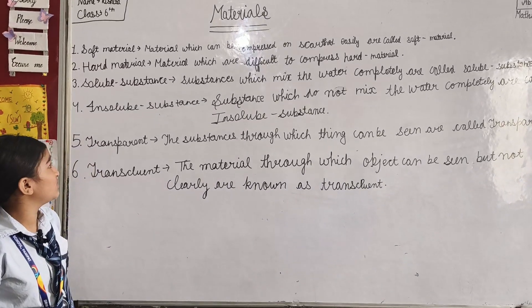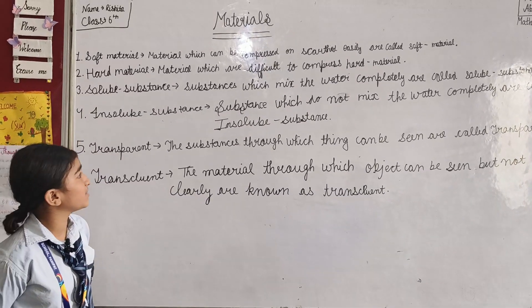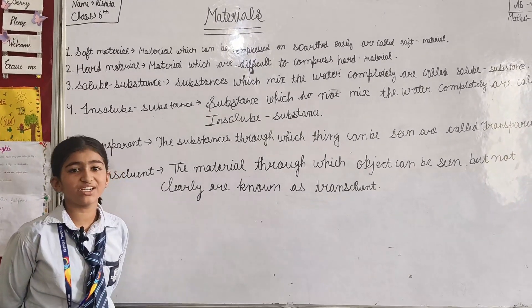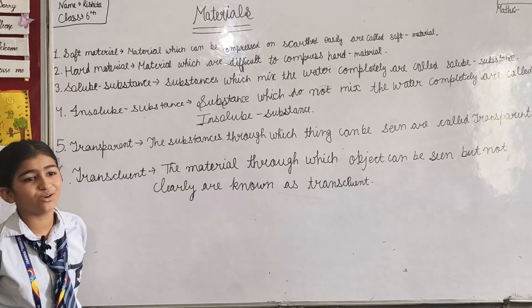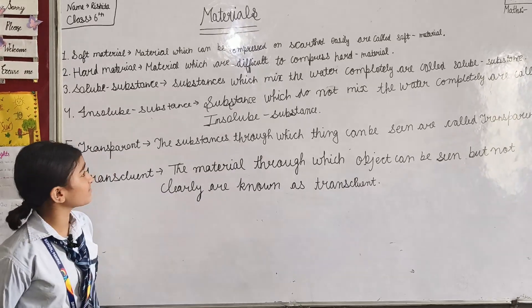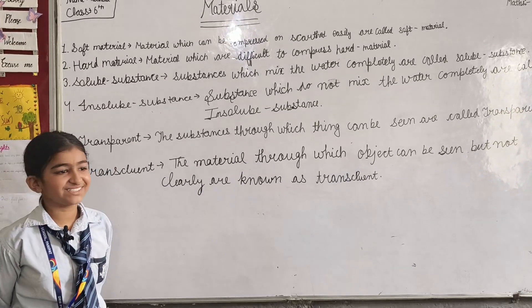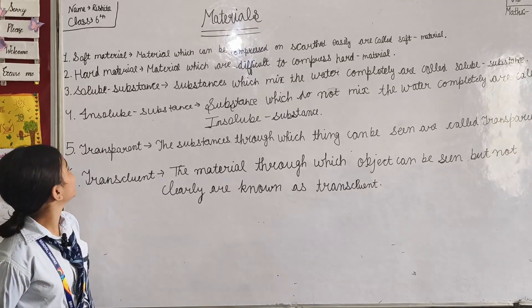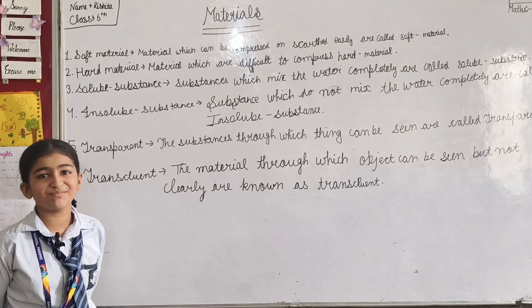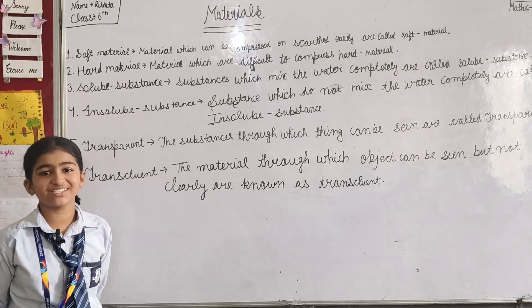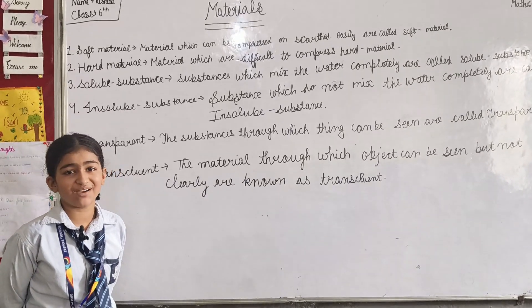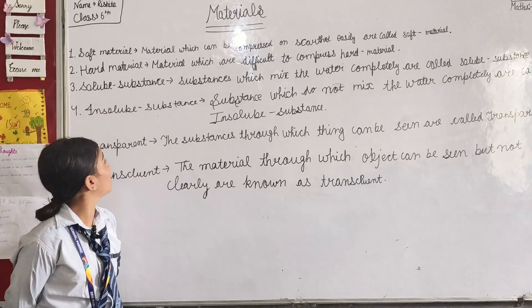Next is soluble substances. Substances which can be mixed completely in water are called soluble substances. For example, sugar and salt.